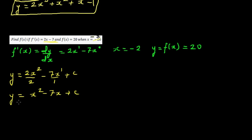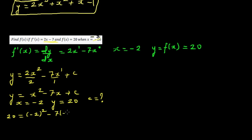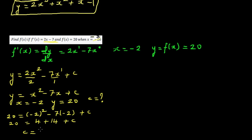To find c, we use the given condition: when x = -2, y = 20. Substituting into the equation: 20 = (-2)² - 7(-2) + c, so 20 = 4 + 14 + c, giving 20 = 18 + c. Therefore c = 2.